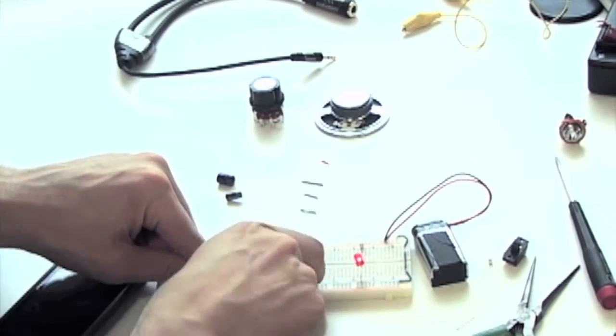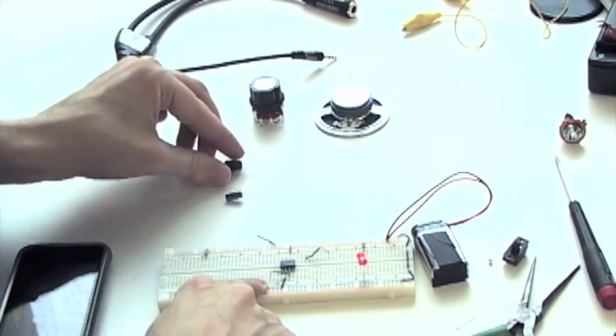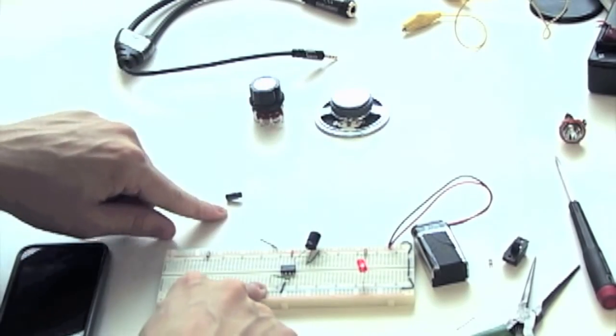We can then insert the LM386 and the components that attach to it. Pause the video and place the necessary components, as they're shown here.